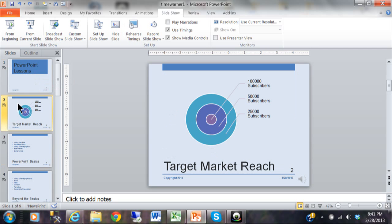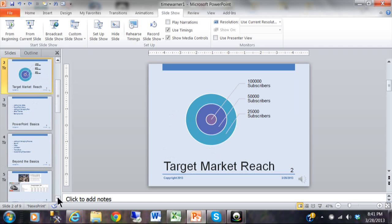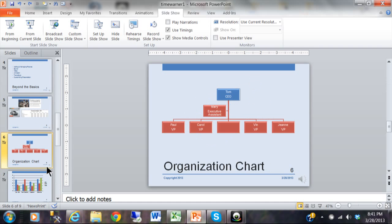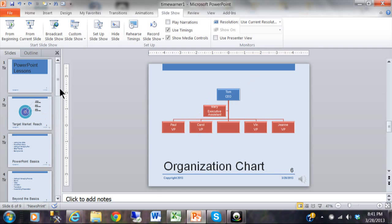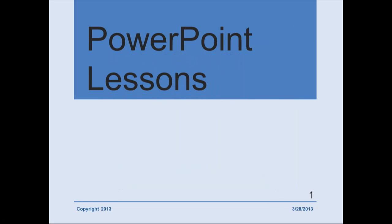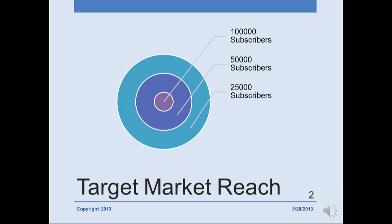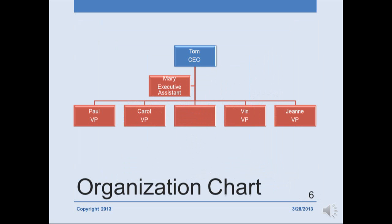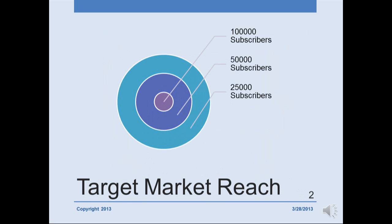Let's say that when you get to slide two, a question might come up where you want to go to a different slide, maybe like the organization chart. One thing you can do is type in the number six and then hit the Enter key — you type the number, it doesn't show on screen, and now it's on the sixth slide. If you type two and hit Enter, you're back to slide two.